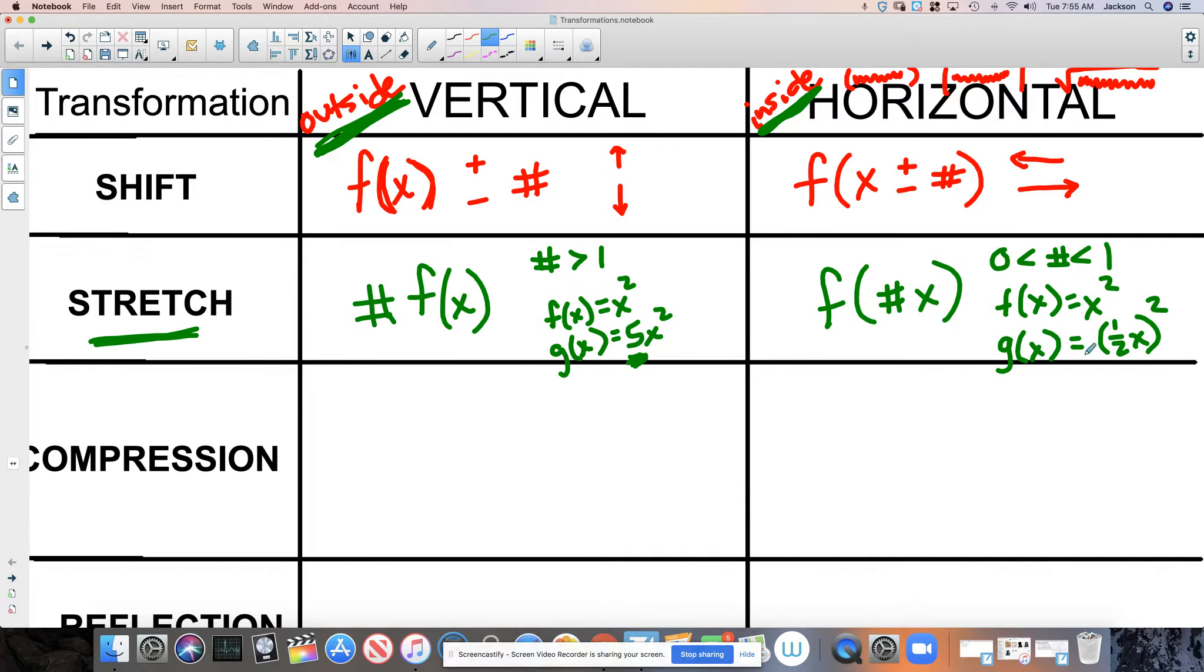We would see a horizontal stretch if we put the 1 half inside parentheses with x before we square it. So notice the location of the number. The number's inside the parentheses here, and then the squared is outside. Over here, there is no parentheses at all. So we would say that this is, quote unquote, outside the function. And we would say over here that this 1 half is inside the function.